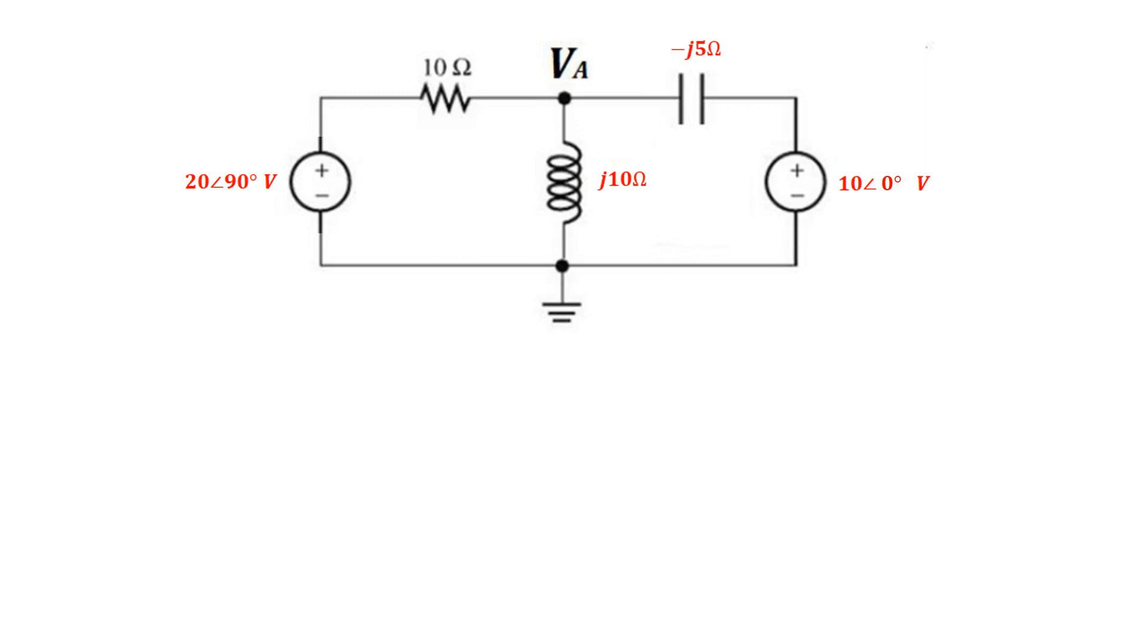Now in order to find VA, we're going to use nodal analysis. So in order to do that, let's just draw our current directions here. So I'm going to pick directions of current I1, I2, and I3 as shown there in the circuit right now.